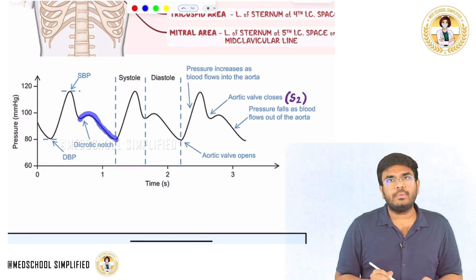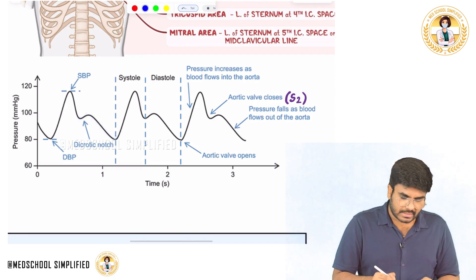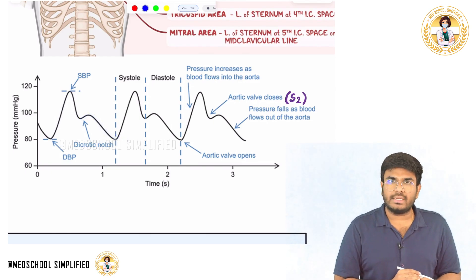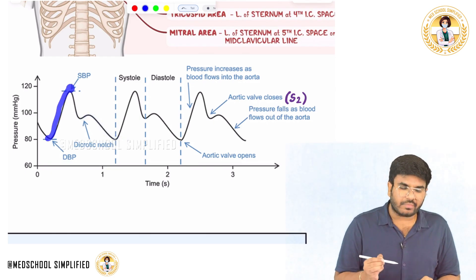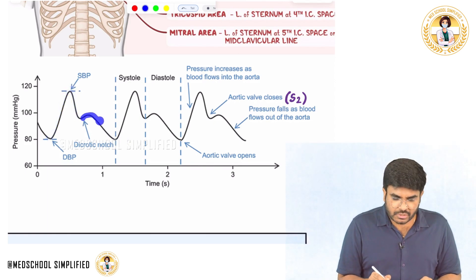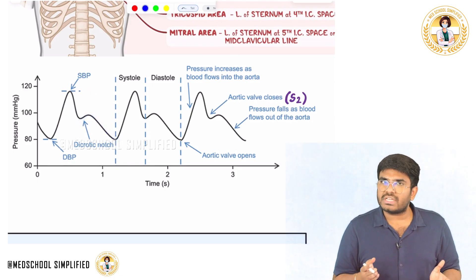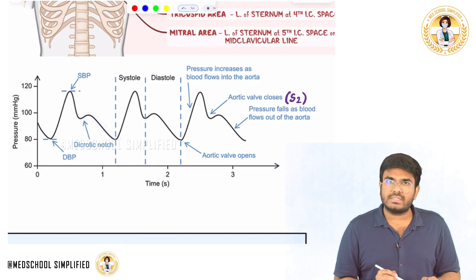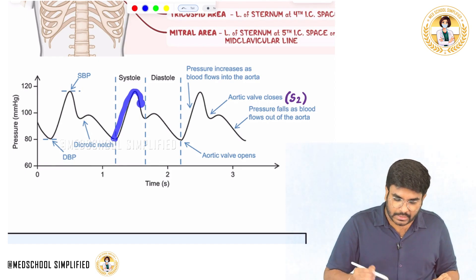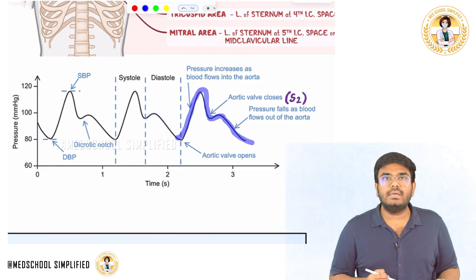Later, gradually with time, during diastole the pressure decreases. During systole your pressure increases; during diastole your pressure decreases. During the rapid ejection phase pressure increases, and during the slow ejection phase pressure decreases. After the closure of the aortic valve, diastole starts. During diastole, blood pressure simply decreases. Pressure initially increases, later decreases — this is how your pulse waveform is going to be.